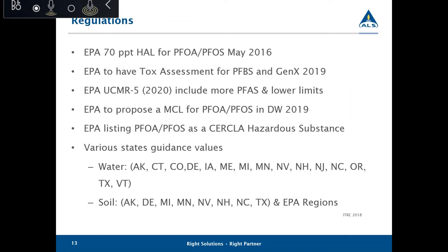Regarding regulations: in May 2016, EPA established the drinking water health advisory level of 70 parts per trillion for PFOA and PFOS, and when found together, the combined concentration is compared against the 70 ppt. EPA plans to release a toxicity assessment for GenX, a replacement PFAS, and perfluorobutane sulfonic acid. Toxicity values for five other PFAS are under development. EPA will propose a regulatory determination for PFOA and PFOS in 2019 for public comment. This regulatory determination is the next step in the Safe Drinking Water Act process for developing a national preliminary drinking water regulation with MCLs in place.